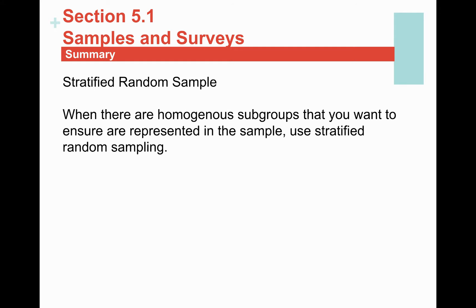Next is a stratified random sample. The idea is simple, but knowing when to use it is key. You use a stratified random sample when you have strata in your population — meaning there are subgroups that share homogeneous characteristics. You want to make sure you include each one of those subgroups in your sample because you want your sample to be representative of the entire population. A very typical stratum that studies include is gender.